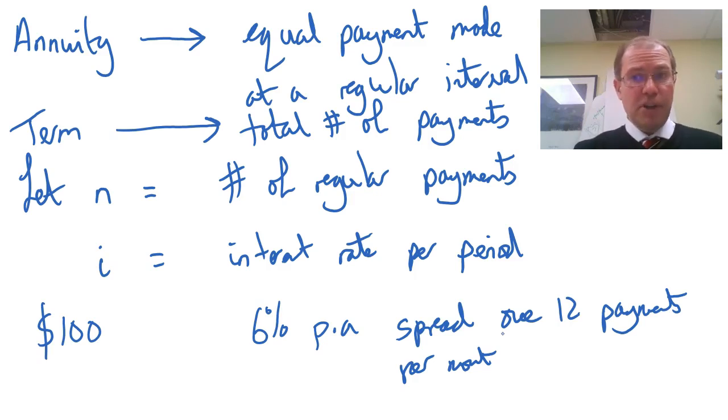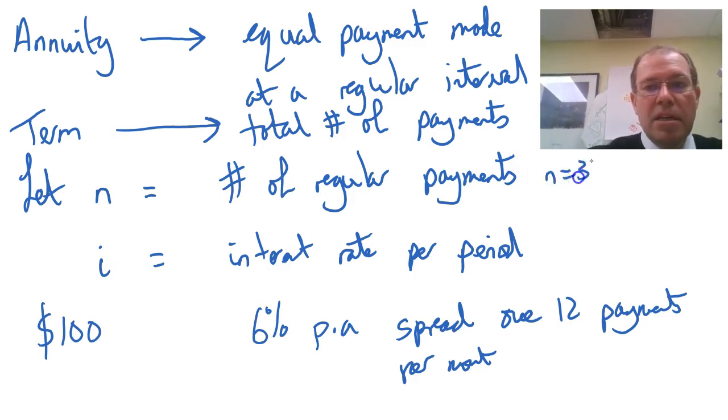Now obviously the first $100 you put in earns interest the first month, and the second, and the third, and the fourth. But the second $100 you put in earns interest the second, third, fourth, fifth. The third $100 earns interest on the third month, fourth month, fifth month, sixth month. So every annuity earns interest and it grows in a compound manner. The term is the total number of payments. In our example, let's say we take it over three years, so because we're doing it monthly, that n will be 36, which is 12 months times three years.